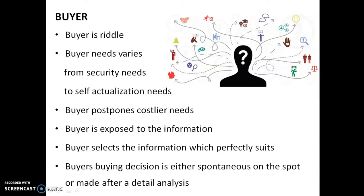The buyer is exposed to information. In earlier times when information was not available, it was easier for the marketing team to convince buyers. But now, in this present scenario, information is available in all corners. So information is easily available to customers and they are very much exposed to it. The buyer knows every aspect of the product — about its cost, quality, reliability, feedback — every piece of information is available to buyers.